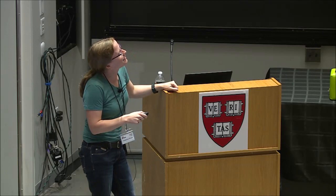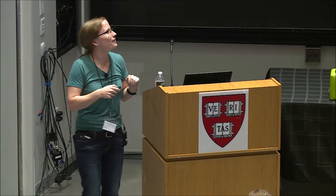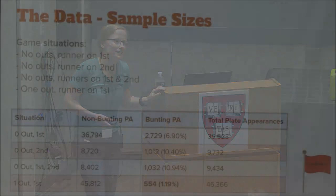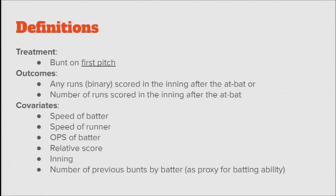This should be throwing up positivity flags for any causal inference people in the audience. That one-out runner-on-first scenario is a very, very small percentage of the time, so being able to say things about it is going to be questionable. As we dig into these questions and the actual sample sizes, it starts to get sparse very fast. Our definition is that we look at a bunt on the first pitch — the idea being the decision was made to bunt a priori. We then look at any runs scored: did they score at least one run from that state to the end of the inning? And also the number of runs scored — a continuous outcome versus a binary outcome.